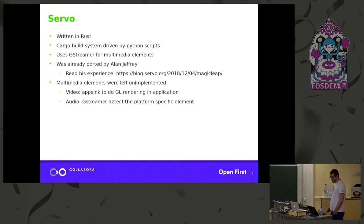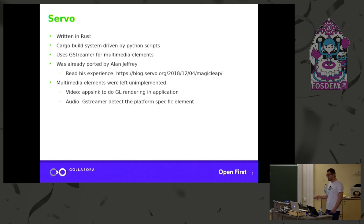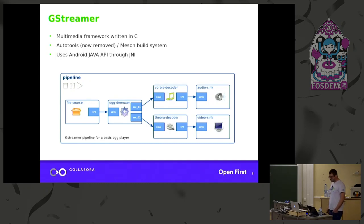For video, they use app sync — meaning they don't let GStreamer render the video; they get the frames out of GStreamer and render them themselves in the application. For audio, it's the opposite — they let GStreamer do everything itself, so GStreamer detects the platform and plugs in the right audio sink. There was no audio sink for Magic Leap yet, so I had to add one.